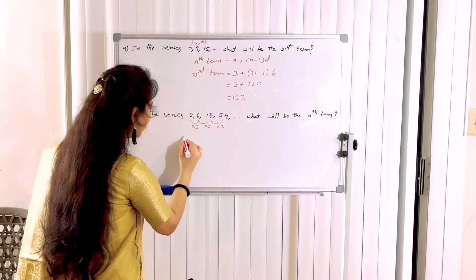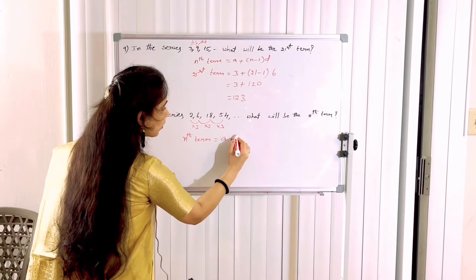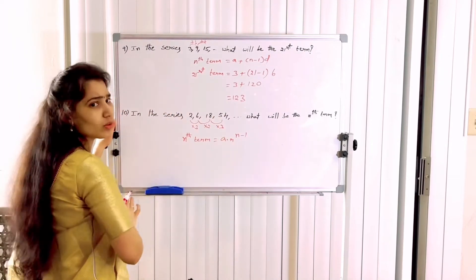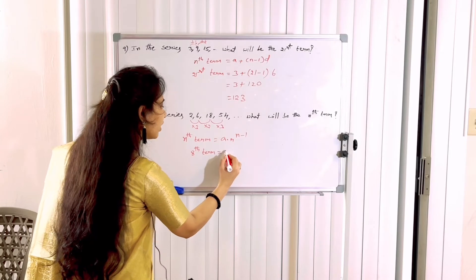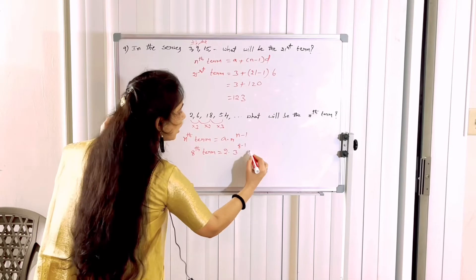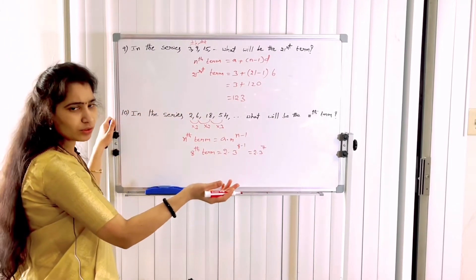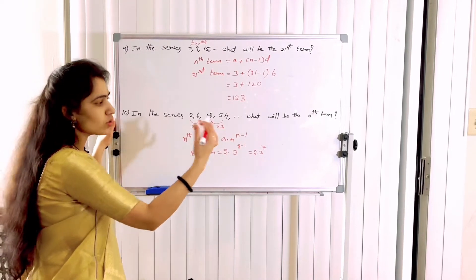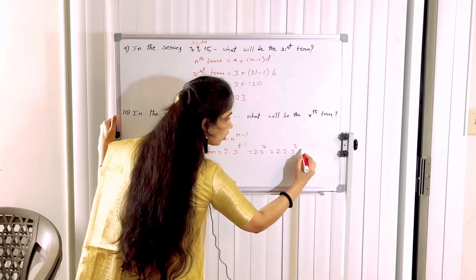For Geometric Progression, the nth term formula is: nth term = A × r^(n-1). Given values: A = 2, r = 3, n = 8. So the 8th term = 2 × 3^7. We can simplify: 2 × 3 × 3³ × 3³.